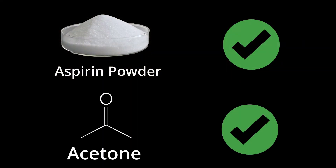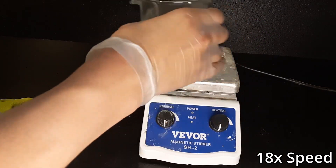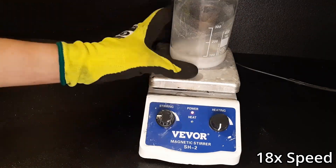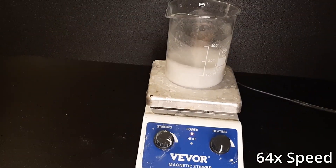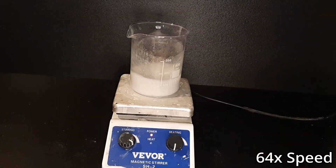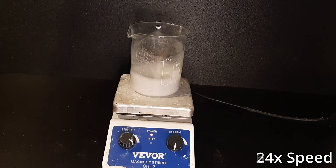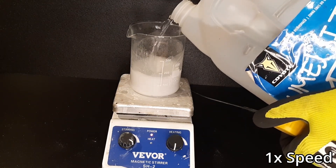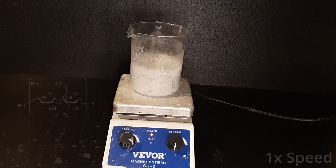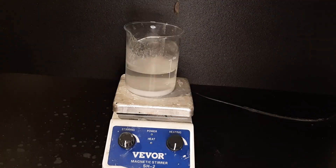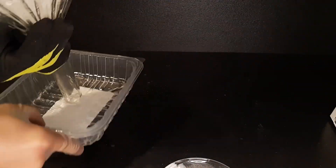I let the mixture dissolve for a few minutes under constant stirring and added a little more acetone. The amount is a bit excessive, but I wanted to make sure I get all the ASA out of the powder. Once I'm confident everything has been extracted, I filter the mixture and collect the filtrate.